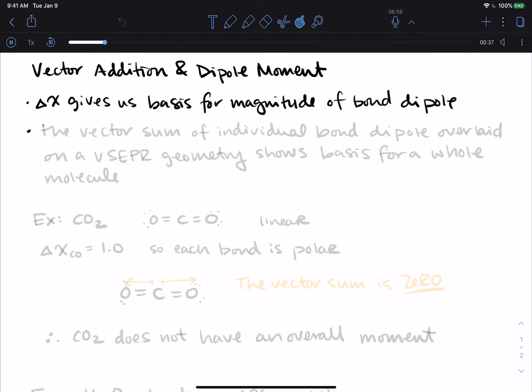In a molecule, the vector sum of individual bond dipoles overlaid on a VSEPR geometry shows the basis for the dipole in a whole molecule.